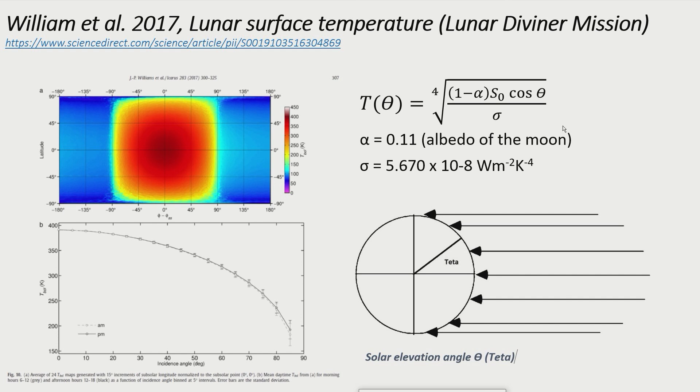T of theta equals the fourth square root of, 1 minus alpha, s zero, cosinus theta, over sigma. With the solar elevation angle, theta, the albedo of the Moon, alpha equals 0.11, and the Stefan-Boltzmann constant sigma.